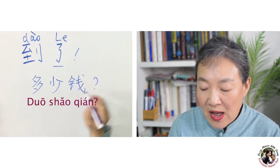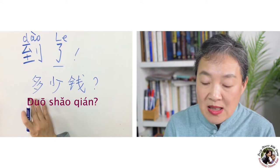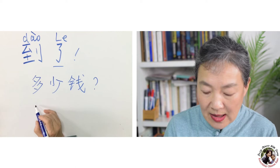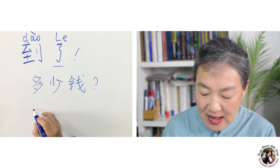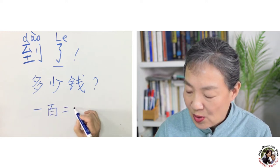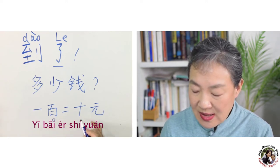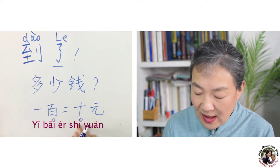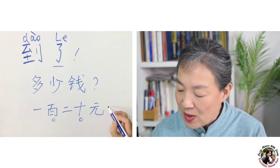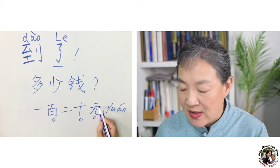多少钱 means 'how much?' Of course you may see the amount from the meter, but you can ask. For example, the taxi driver may say 一百二十元 — 百 means hundred, 十 means ten, so 120 yuan. 元 is the name of the Chinese currency.